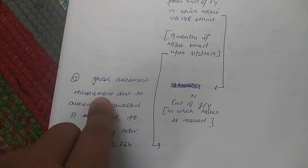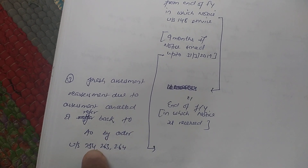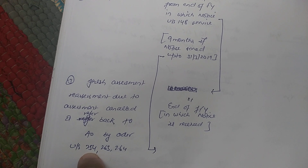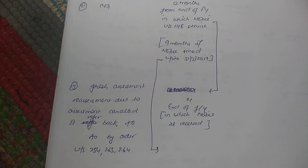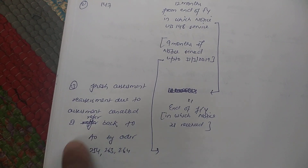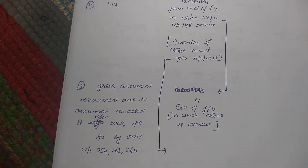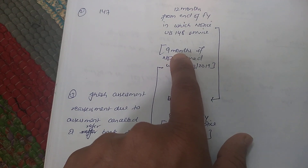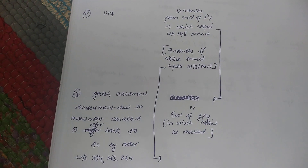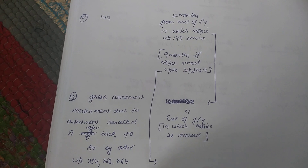If the AO is doing assessment under Section 147, he is required to complete assessment within 12 months from the end of the financial year in which notice under Section 148 is served. This 12-month limit is replaced by 9 months if the notice is served up to 31st March 2019. If there is a fresh assessment or reassessment because assessment is cancelled and referred back to AO by order under Sections 254, 263, or 264, the same time limits apply — 12 months, or 9 months if notice served up to 31st March 2019.